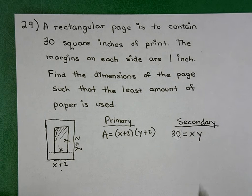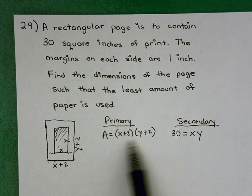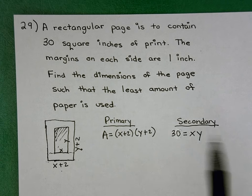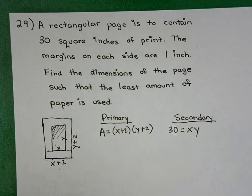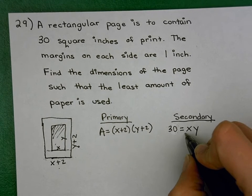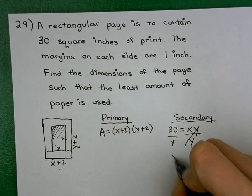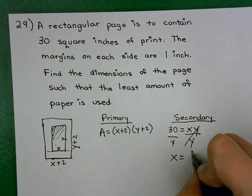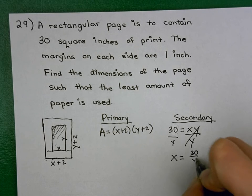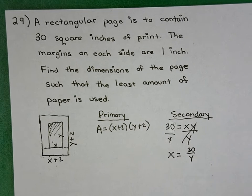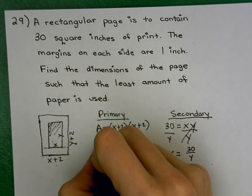Now that we've got that, next step is to solve for one of these variables by using my secondary equation. We're going to go ahead and plug it into one of the variables, and it doesn't matter whether you do X or Y. I'm going to go ahead and solve for X in this particular case. And so we get X equals 30 over Y, and I'm going to take that 30 over Y and I'm going to plug it into my X over here.